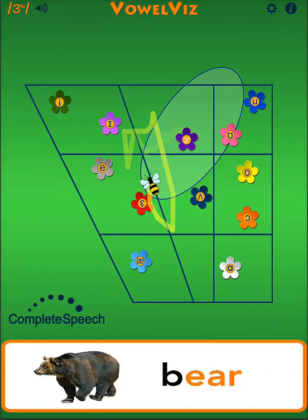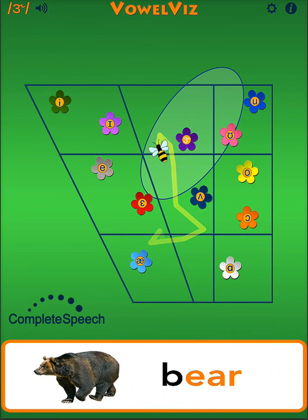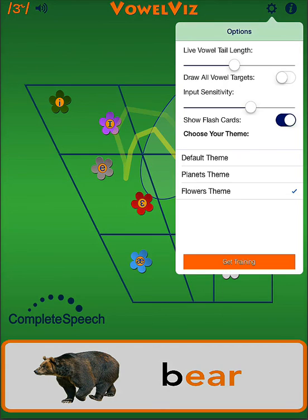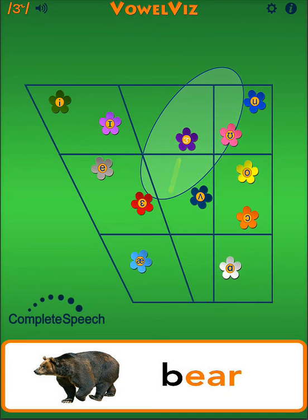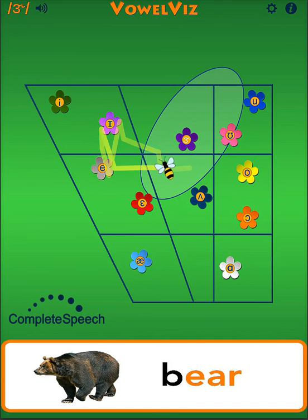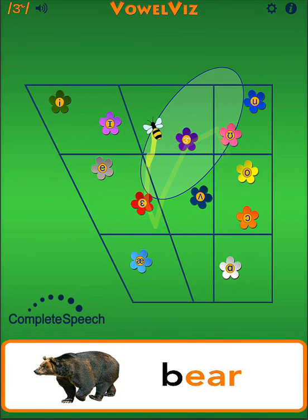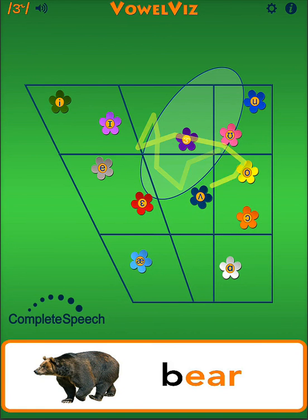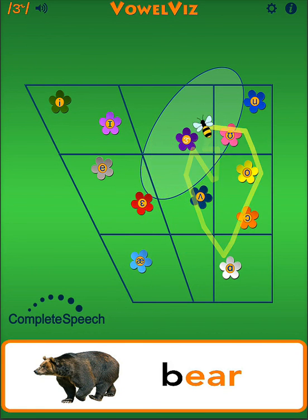For this demonstration, I have been using VowelVizSchools' flowers theme, and this school-oriented version of VowelViz lets you pick other themes too. VowelVizSchools is available in the Apple App Store. Educational institutions can qualify for the volume purchasing program and receive a 50% discount on VowelVizSchools. Look for our other upcoming tutorials about VowelViz, vowels, and R.